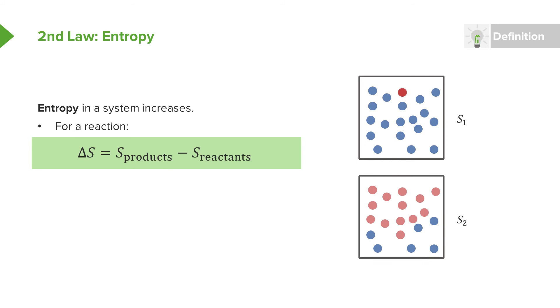For a given reaction, if we know what the entropy of the products are and we know what the entropy of the reactants are before they form those products, the change in the entropy of the system is simply the difference. It's the entropy of the products minus the entropy of the reactants.